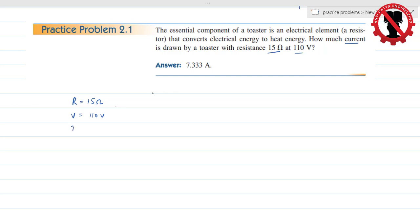As we know that V is equal to I R, so from here I is equal to V by R. So when we substitute the values, voltage is 110 and resistance is 15. So we get 7.333 amperes.